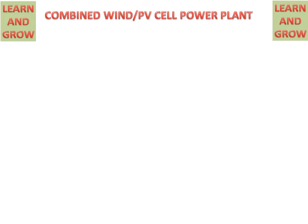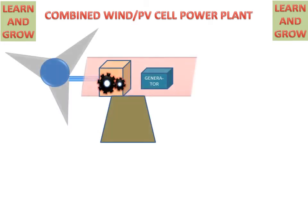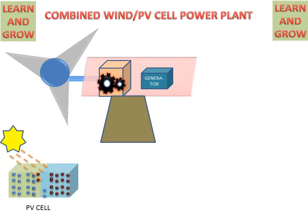Firstly, we will discuss about the parts of combined wind and photovoltaic cell power plant. We have a wind turbine and a PV cell.